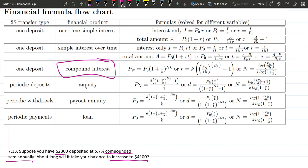And what are we trying to find? About how long? So we want to know how much time. Now time here is measured in the variable n, which is the number of compounding periods. So we want the one that's already solved for n.